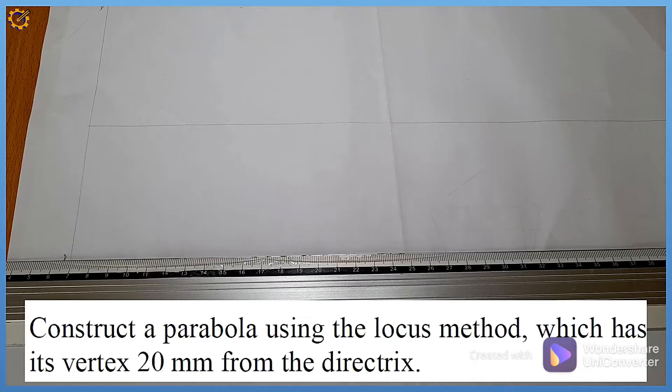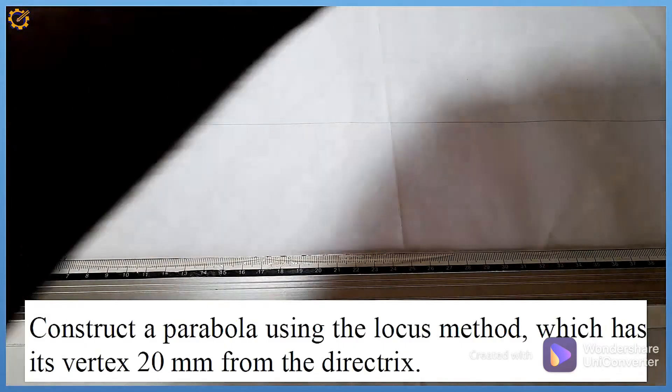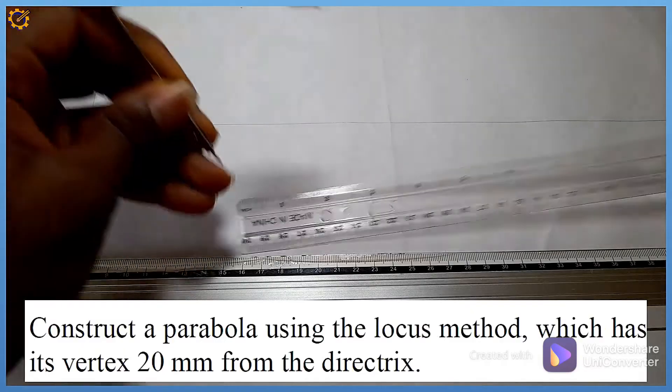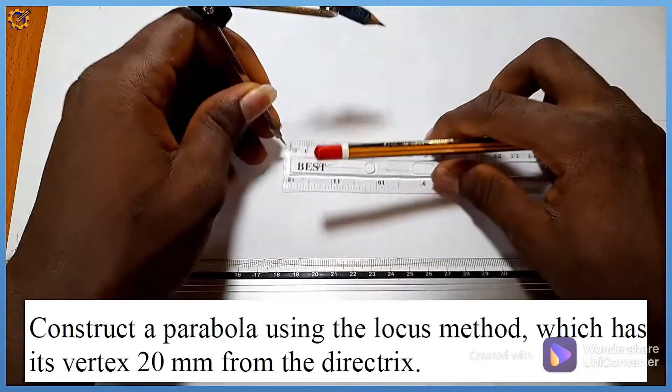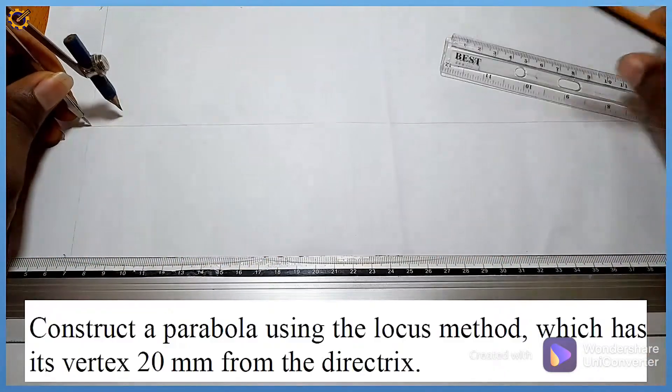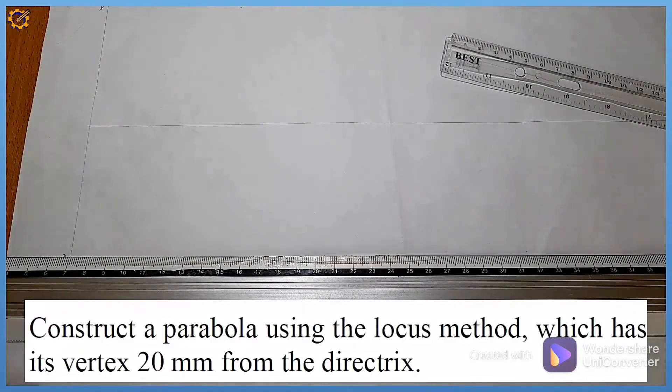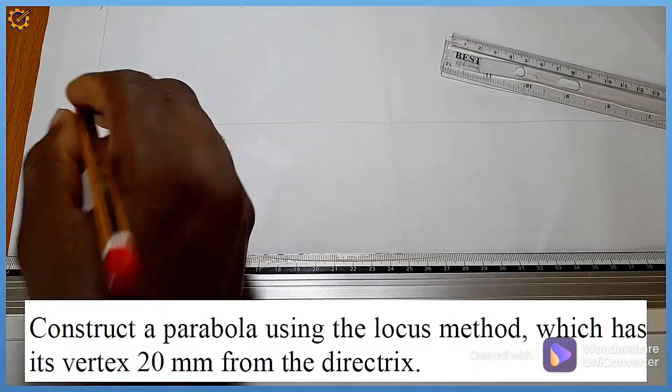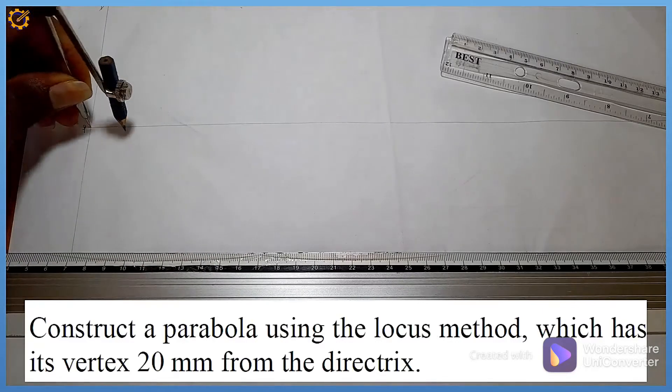To get that vertex, I'm going to pick my compass with length 20 mm. This is my compass with length of 20 mm. From this junction, I name this junction P. From junction P I strike.